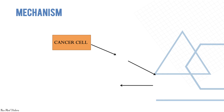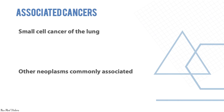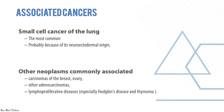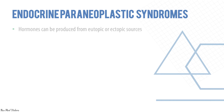Cancer cells release cytokines, hormones, and antigens which act on a remote cell and cause specific symptoms. The common cancers associated are cancer of the lung, breast, ovary, adenocarcinomas, and lymphoproliferative diseases like Hodgkin's.